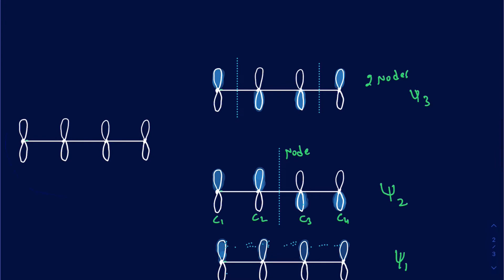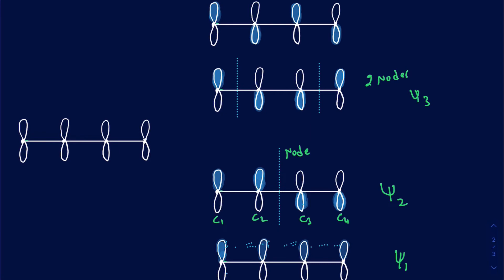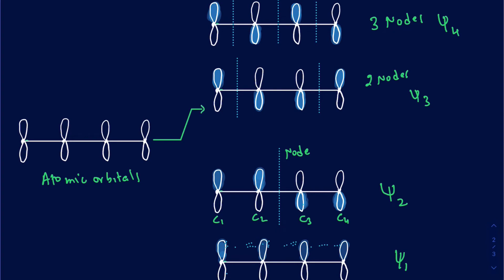For the last molecular orbital, psi four, I need more nodes than two. The only possibility is that everything is flipped — none of the orbitals are in constructive interference; they're all in destructive interference. You get one node there, another one there, and another one there — a total of three nodes. These were your atomic orbitals, whose energy sits somewhere in the middle.